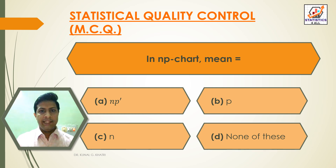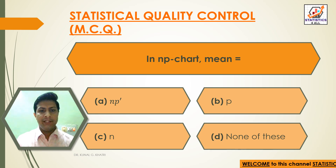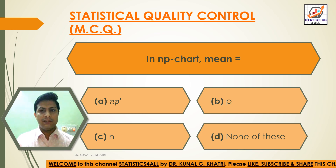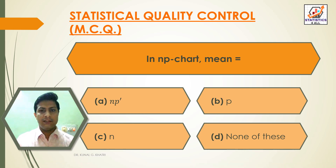First question: in NP chart, mean is equal to? Option A: NP', Option B: P, Option C: N, Option D: none of these. Answer: Option A — in NP chart, mean is equal to NP'.